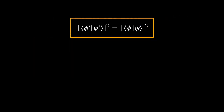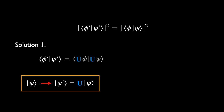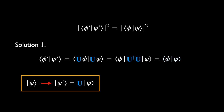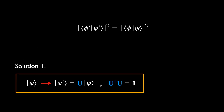Let's look at how the constraint of invariance of probabilities can be satisfied. Solution 1: the probabilities are unchanged because the amplitudes themselves remain the same. We implement the transformation with some linear operator U, which is not assumed to be unitary. As with any linear operator, we can move it out of the bra side and replace it with a Hermitian conjugate. Then the requirement of the amplitude remaining unchanged is imposed. Since phi and psi are arbitrary states, this implies U-dagger U must equal the identity, meaning the operator U must be unitary.